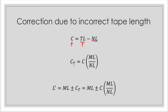C sub T is the total correction. This means that when you use the tape many times, it accounts for all the corrections. C sub T is equal to C — the correction we computed as TL minus NL — multiplied by ML over NL. ML is the measured length, meaning the length you measured using the tape, and NL is the nominal length. Once we compute the total correction, we can now compute for the true measured length.